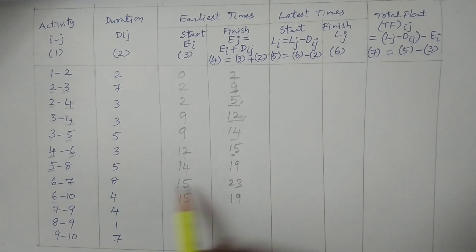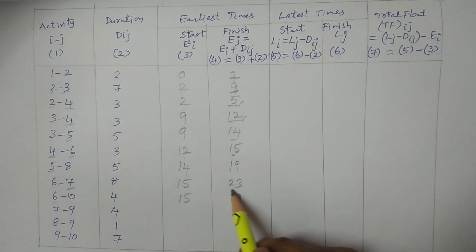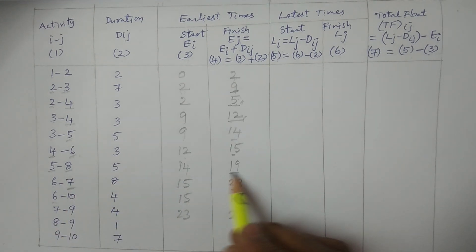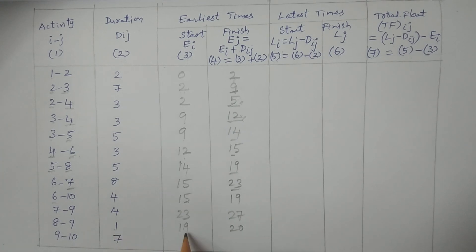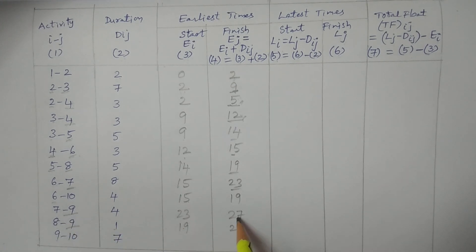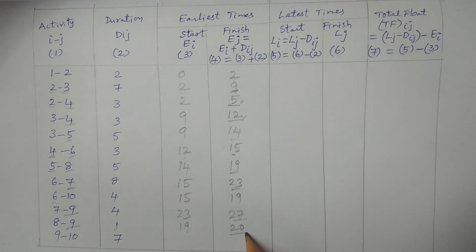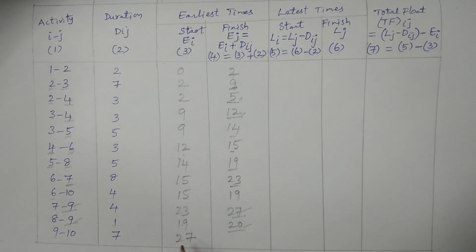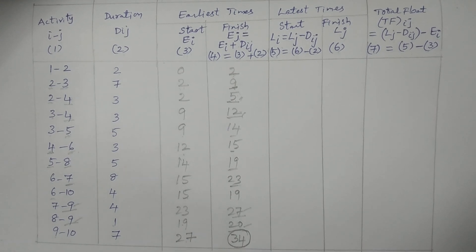E7: only one value from 6 to 7, so E7 equals 23. 23 plus 4 equals 27. For event 8, from 5 to 8: value 19. 19 plus 1 equals 20. For event 9, from 7 to 9 and 8 to 9, values are 27 and 20. Take the maximum: 27. Then 27 plus 7 equals 34. This is the minimum total duration of the project — 34 days.